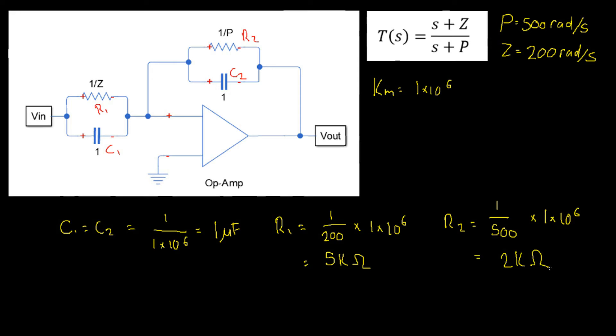Ok, and that's it. We're done. We found the component values which would give us the desired zero and pole for our transfer function.